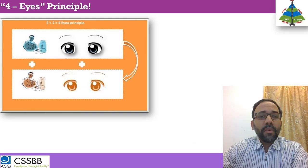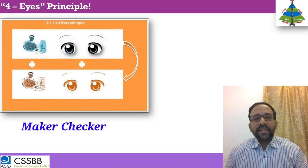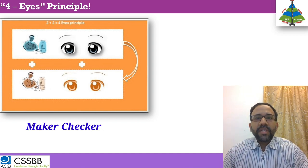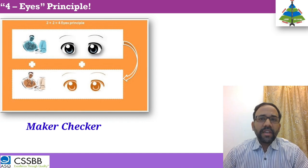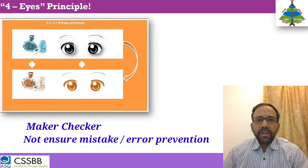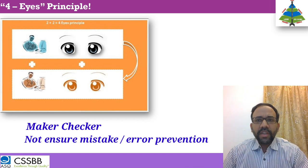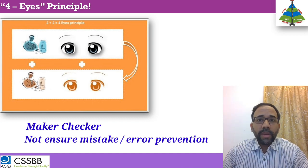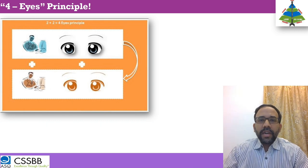I am going to cover the four eyes principle. When I say four eyes, I mean maker-checker. Maker-checker is an age-old concept — somebody creates it, somebody is checking it. The whole point I am going to discuss here is why maker-checker will not ensure or prevent process quality, will not ensure defect-free. It will definitely create defects, and even one defect will wipe out the company. That's the four eyes principle.